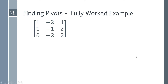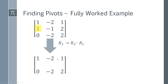Let's look at how you can actually find pivots from a given matrix with a fully worked example. You should immediately notice this matrix is not in row echelon form, so you need to put it into row echelon form first. We want a zero in a certain position, which we can get simply by making row two equal to row two minus row one. Doing that gives: one minus one is zero, minus one minus minus two is one, and two minus one is one — getting closer to row echelon form.